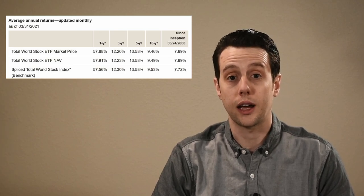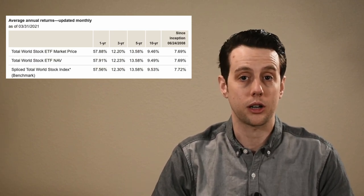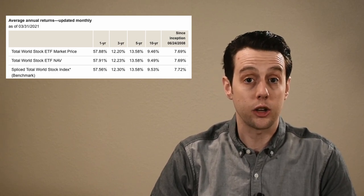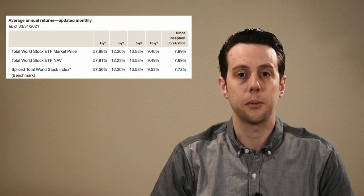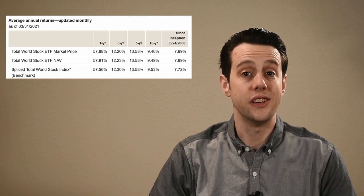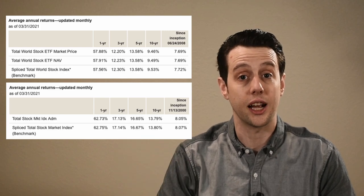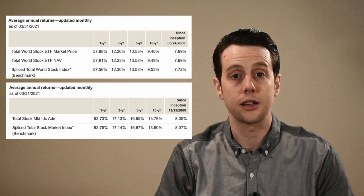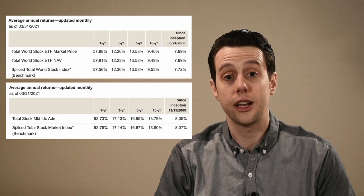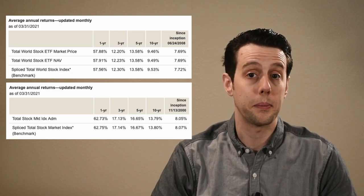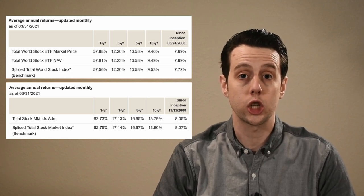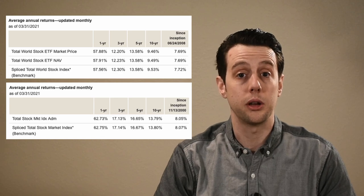Let's look at the performance. We'll look at the ETF, ticker VT, since it has more history. Since the ETF was created in 2008, just months before the 2008 market crash, it has delivered an annualized return of 7.69%. The 10-year annual return is 9.46%. If we compare the 10-year return to VTSAX, the Vanguard Total U.S. Stock Index, the U.S. Stock Index gained 13.79% annually over the past 10 years. This is because international stocks have recently underperformed U.S. stocks.